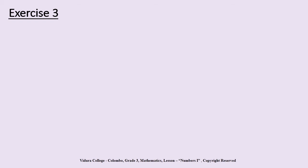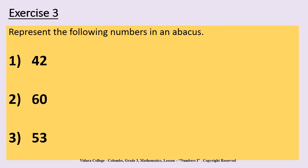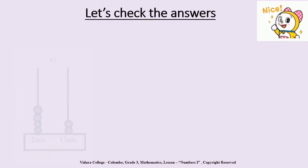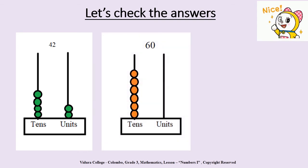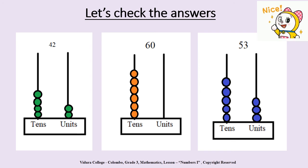Exercise 3: Represent the following numbers in an abacus — 42, 60, 53. When you represent 42, you should draw two balls in the units place and four balls in the tens place. When you represent 60, you should draw six balls in the tens place but none in the units place, because the units place value of 60 is zero. To represent 53, you should draw three balls in the units place and five balls in the tens place. Did you get all the answers correct? Well done.